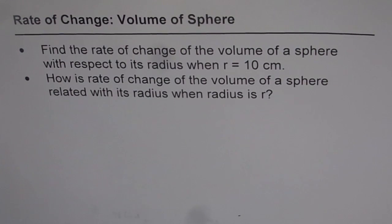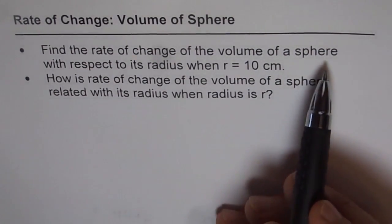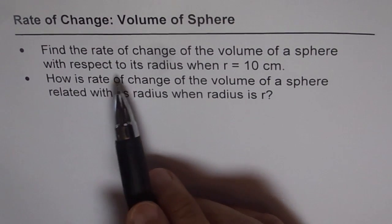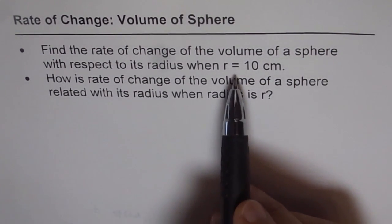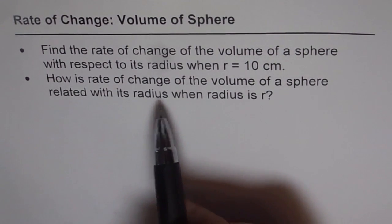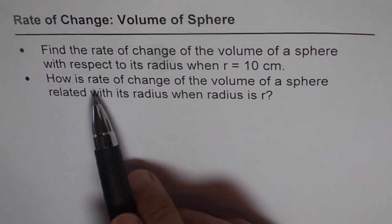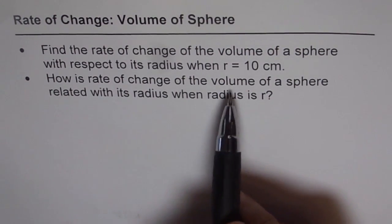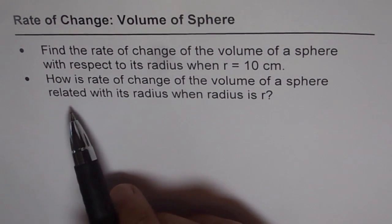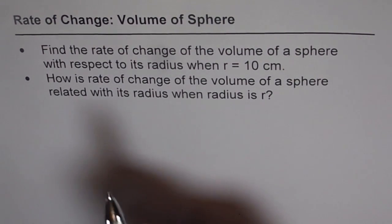Let's explore rate of change of volume of a sphere. Find the rate of change of the volume of a sphere with respect to its radius when r equals 10 cm. Part B is to generalize this — how is rate of change of volume of a sphere related with its radius when the radius is r.